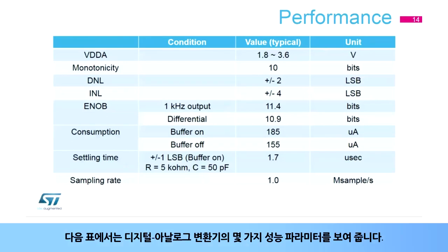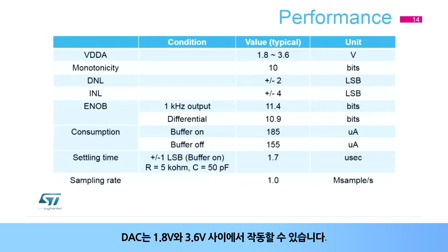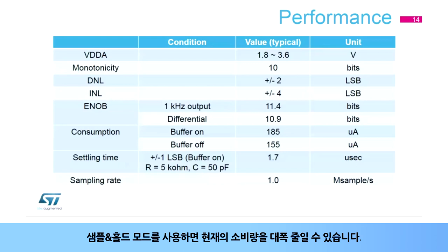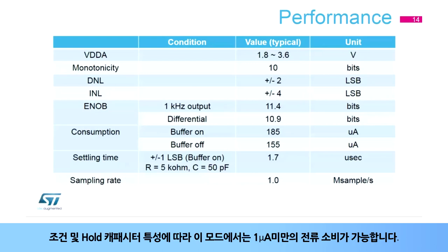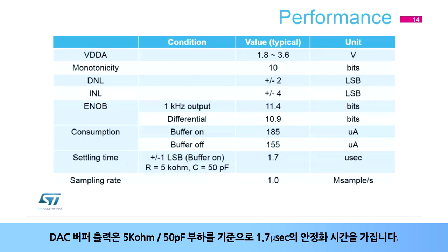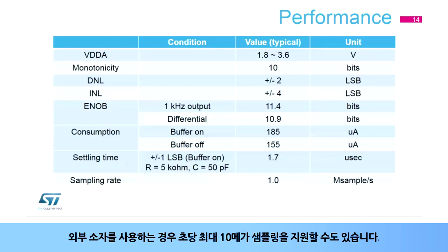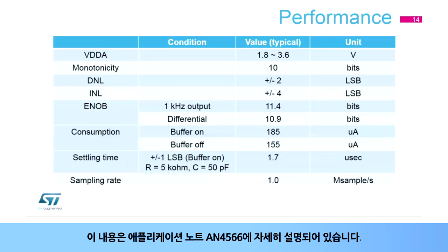The following table shows some performance parameters for the digital to analog converter. The DAC can work between 1.8 and 3.6 volts. 10-bit monotonicity is guaranteed. Power consumption is 185 microamps when the buffer is enabled and 155 microamps when the buffer is disabled. By using sample and hold mode, the current consumption can be drastically reduced. Depending on the condition and the hold capacitor characteristics, less than 1 microamp current consumption is possible. The DAC buffered output has a settling time of 1.8 microseconds with a 5 kilohm and 50 pF load. The DAC can handle a sampling rate of 1 mega sample per second. When using external components, it can support up to 10 mega samples per second. This is described in detail in application note AN4566.